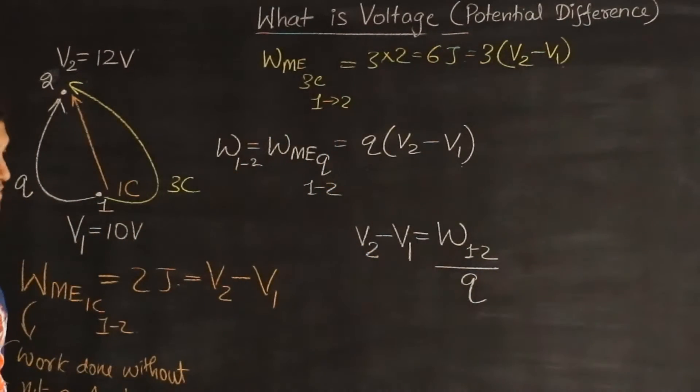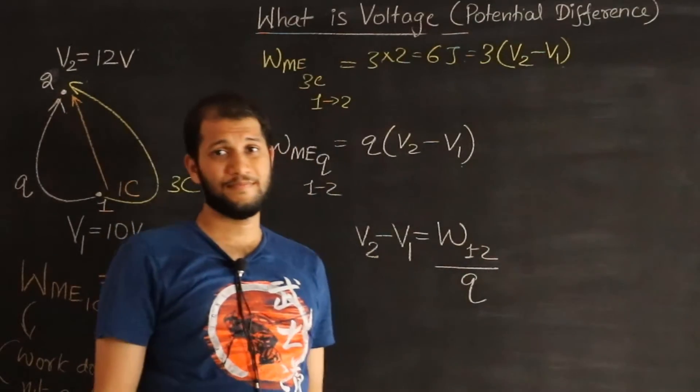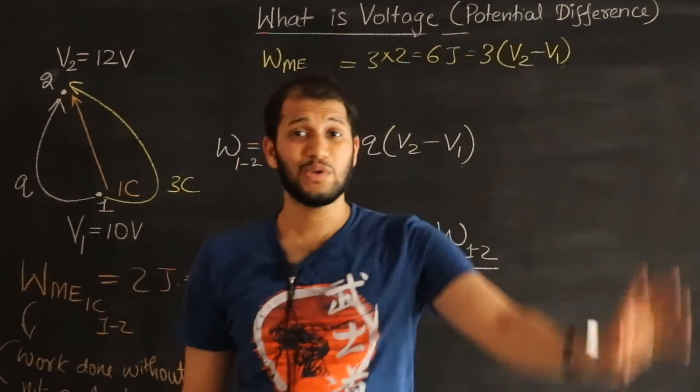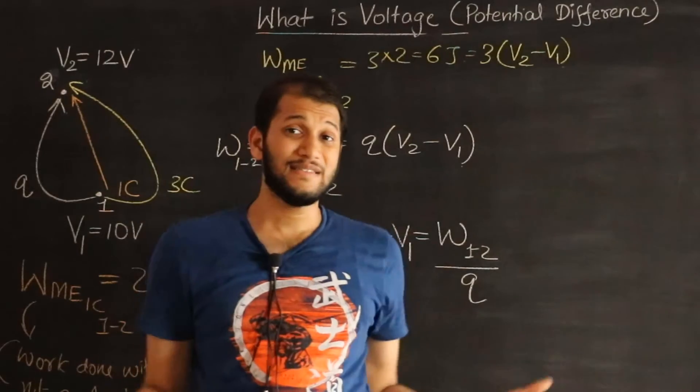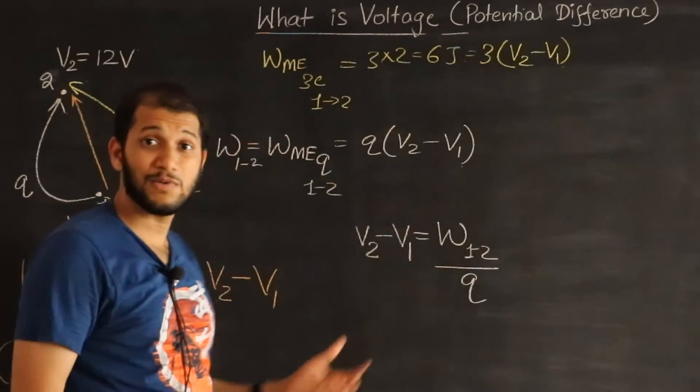That's what this is. It's how much work you do per coulombs in moving it from one point to another. That is the potential difference between two points.